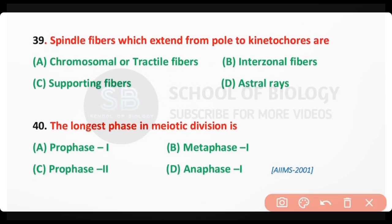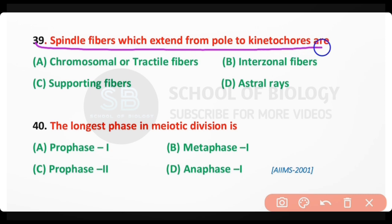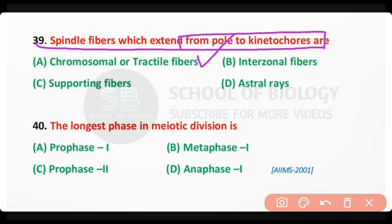Question number 39. The spindle fibers which extend from the pole to the kinetochore are: chromosomal or tractile fibers; interzonal fibers; astral fibers. The correct answer is option A. Spindle fibers which extend from poles to the kinetochore are chromosomal or tractile fibers, also known as kinetochore fibers.